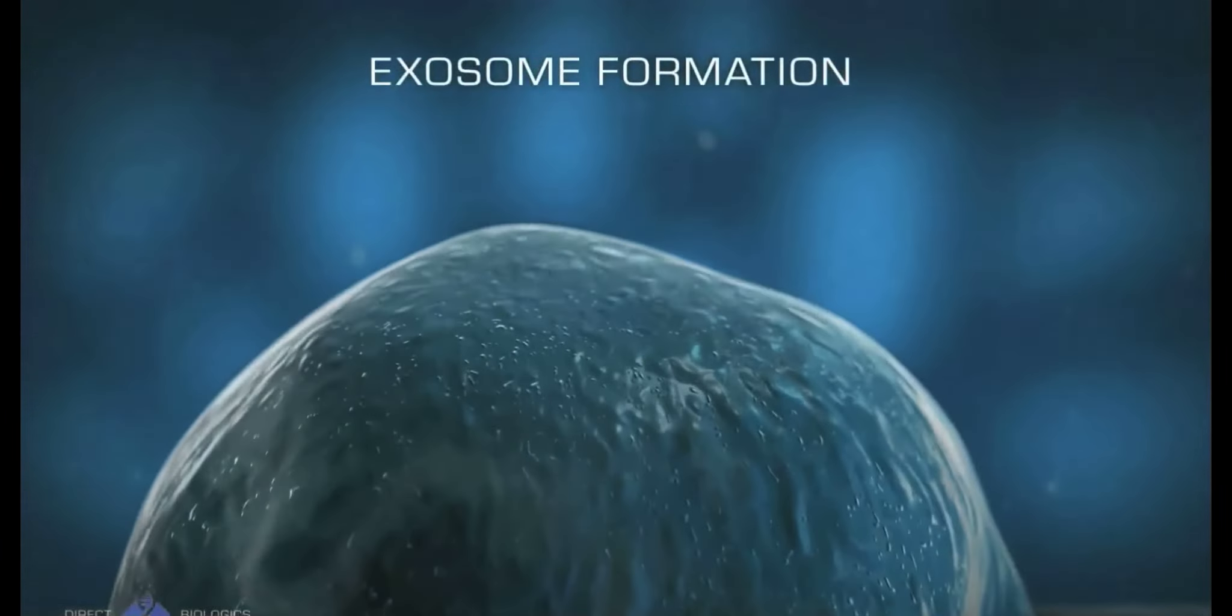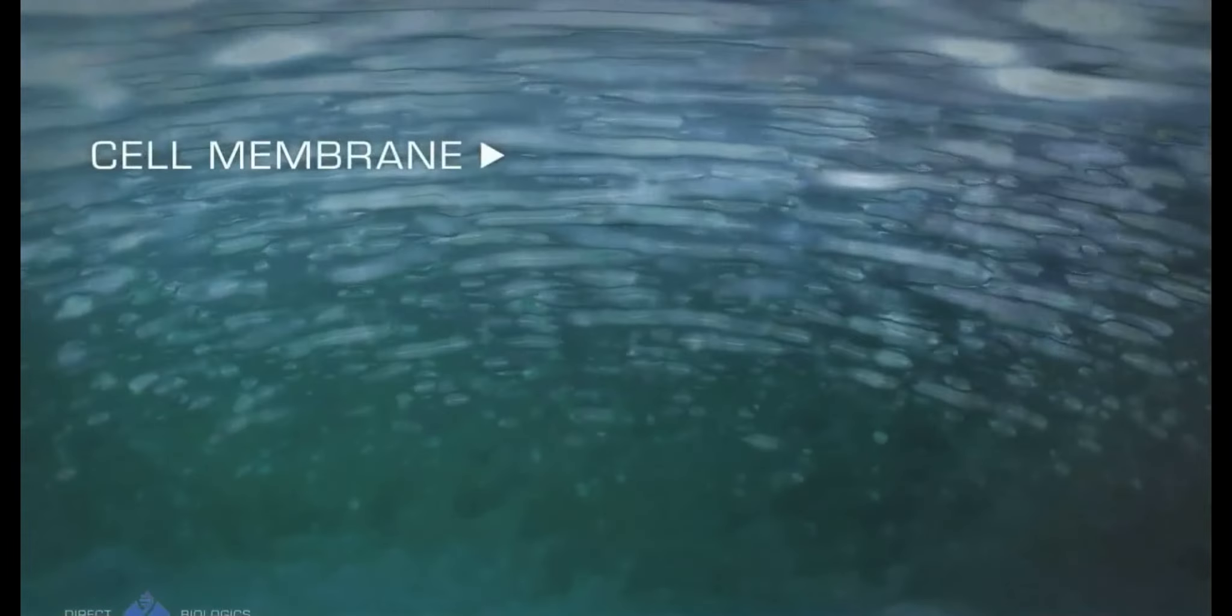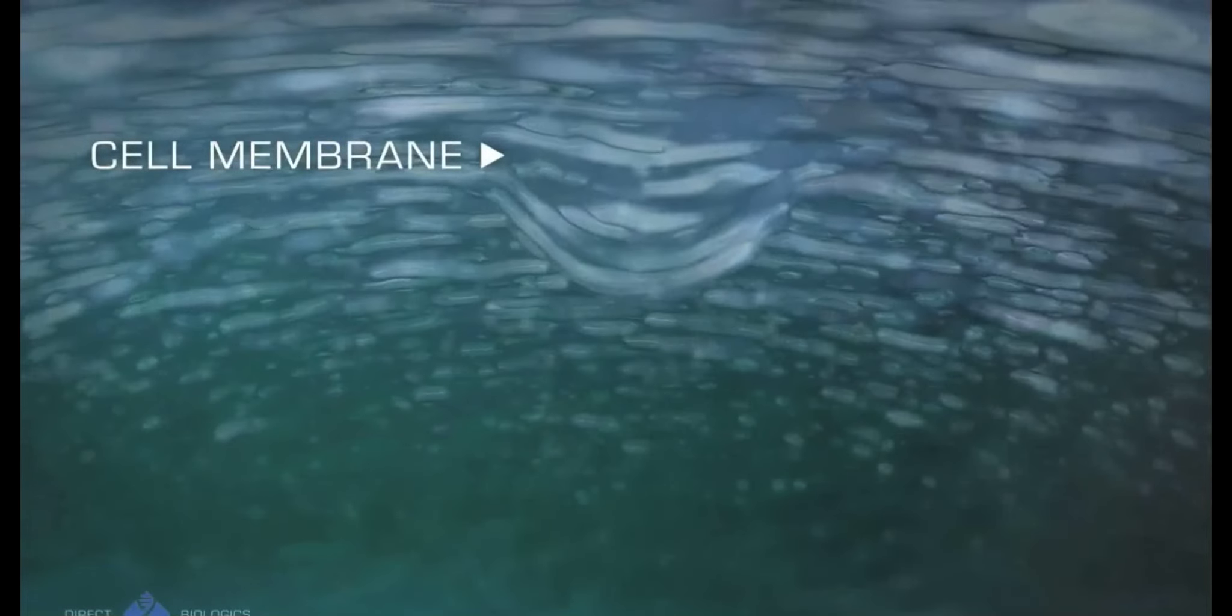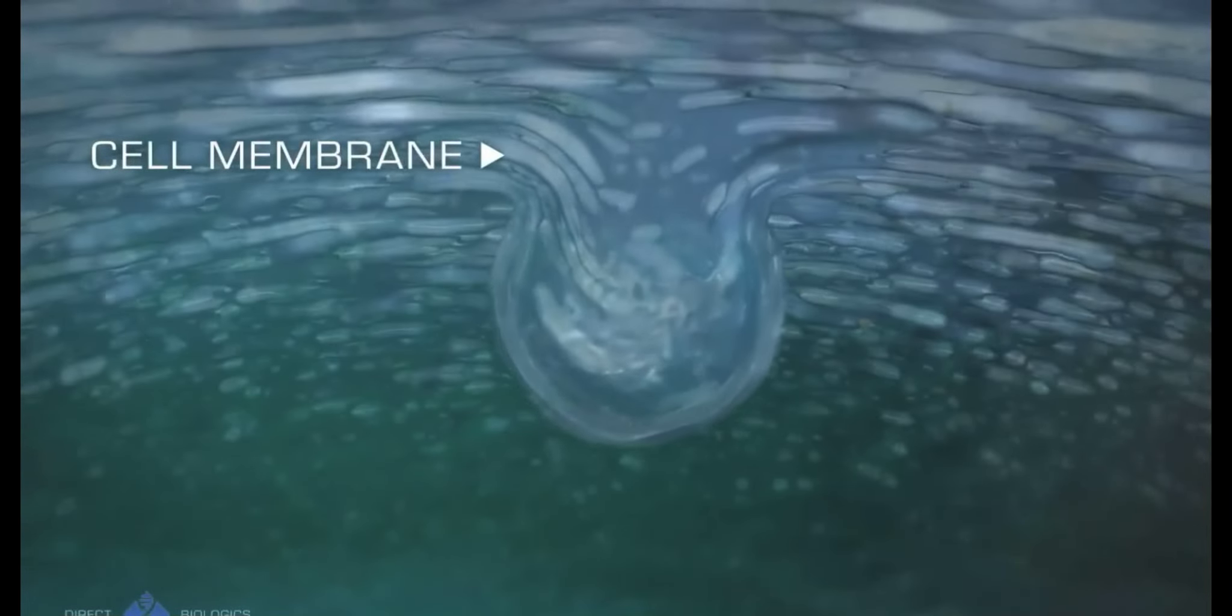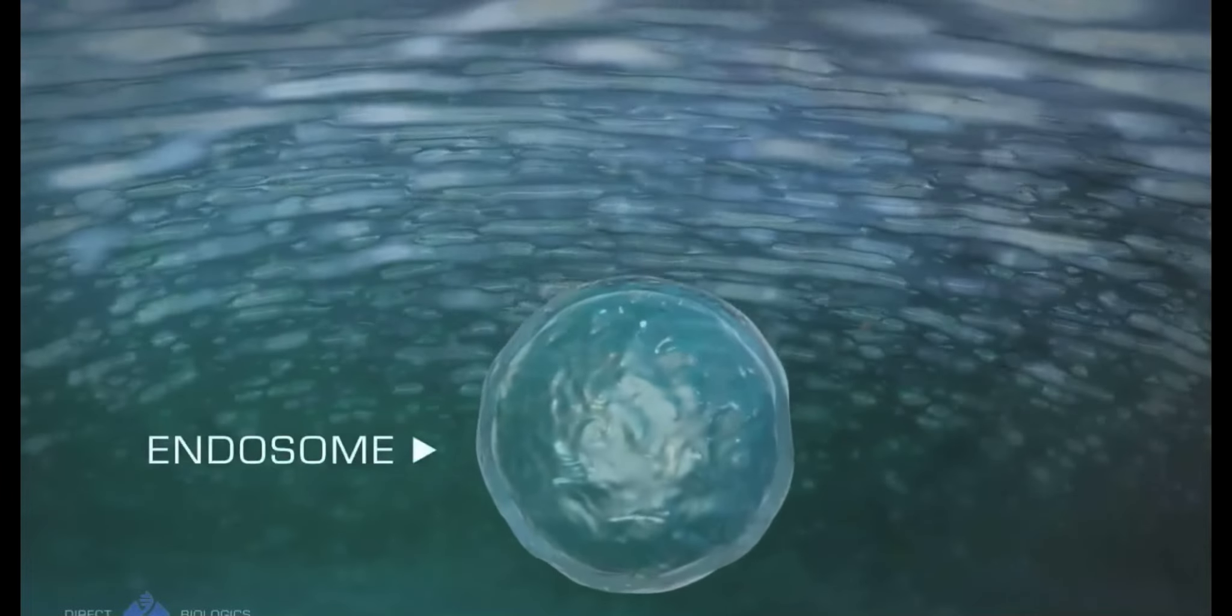Let's find out how exosomes are made. Inside the cell, a cell membrane forms inward, forming a special type of lipid vesicle called an endosome.